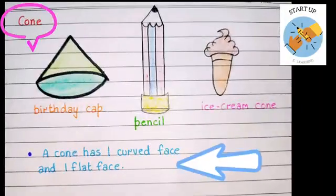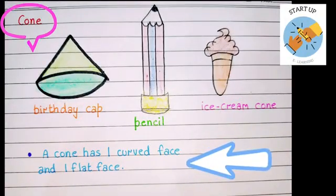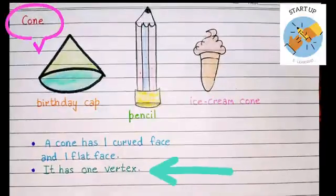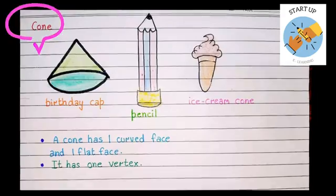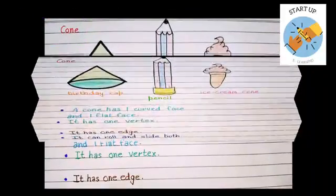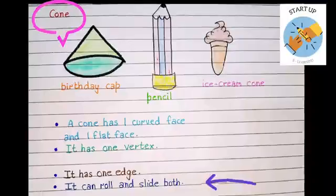Some qualities of a cone shape is a cone has one curved surface and one flat surface. And it has only one vertex, means corner. It has only one edge. And a cone can slide and roll both.